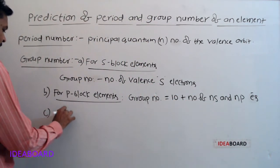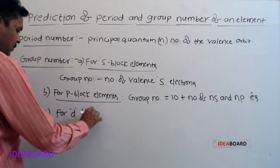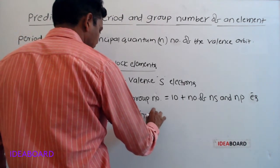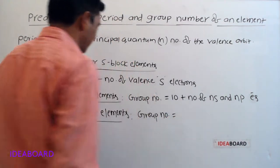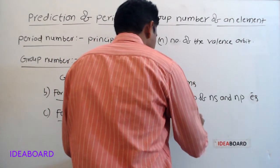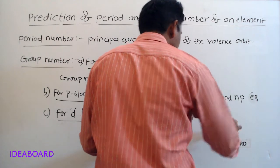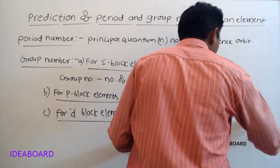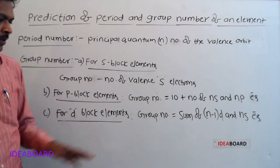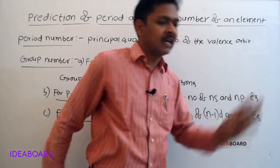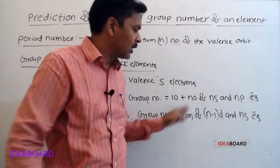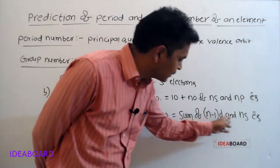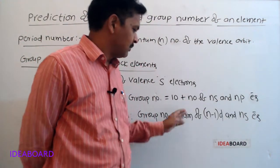For d block elements, group number is equal to the sum of (n-1)d and ns electrons. Because after the s block, d block elements are placed. So for d block elements, group number equals the sum of (n-1)d electrons and ns electrons.